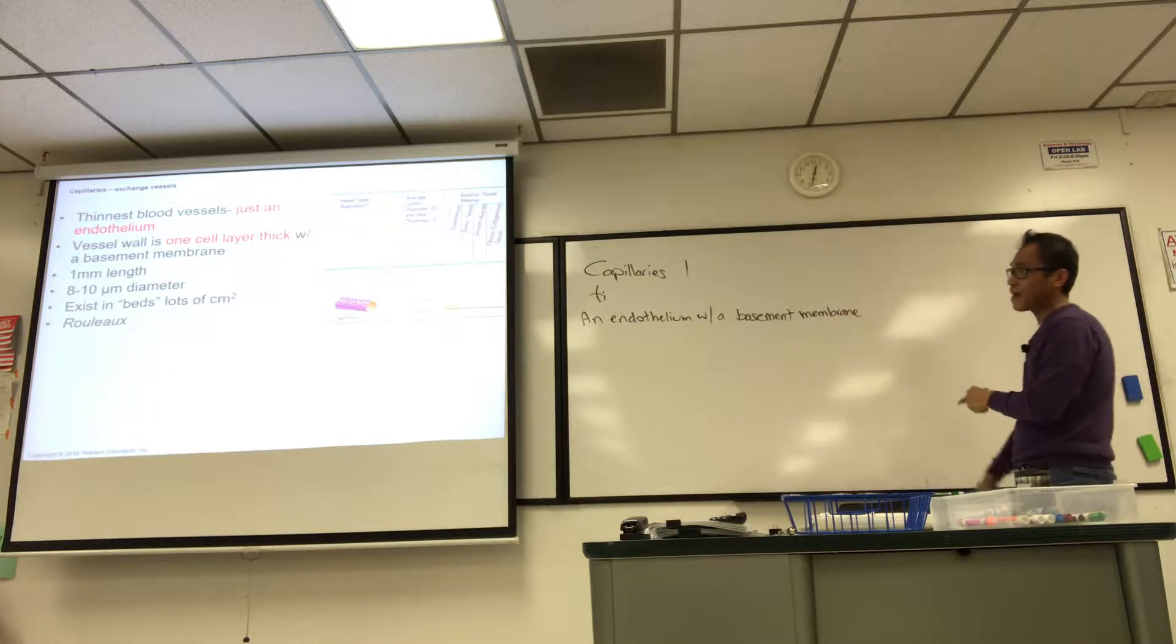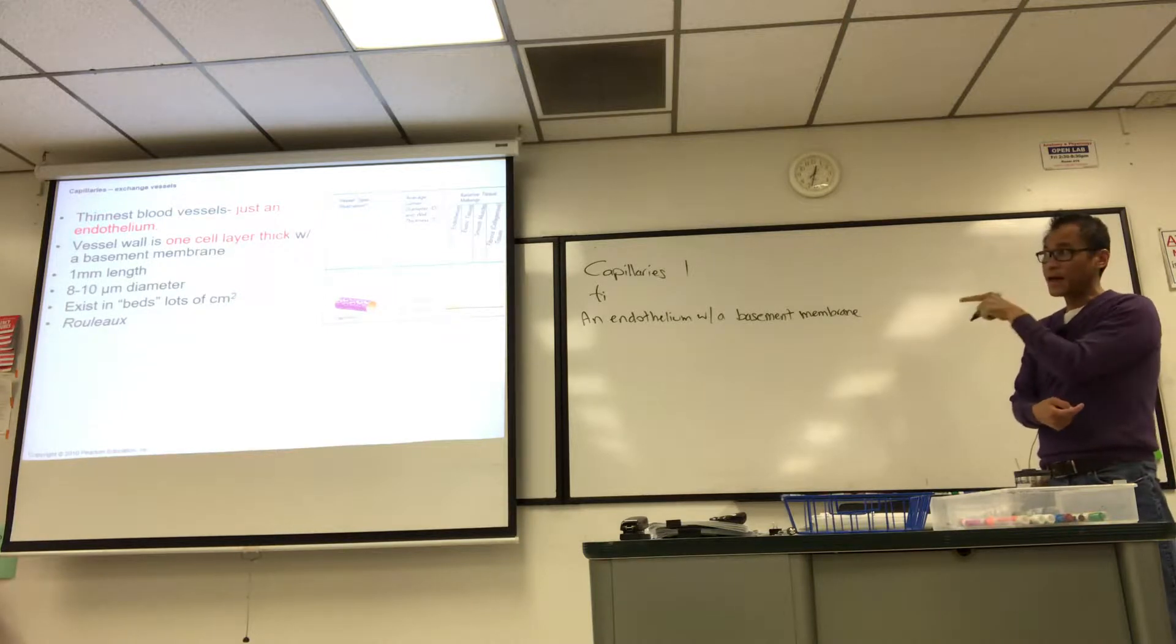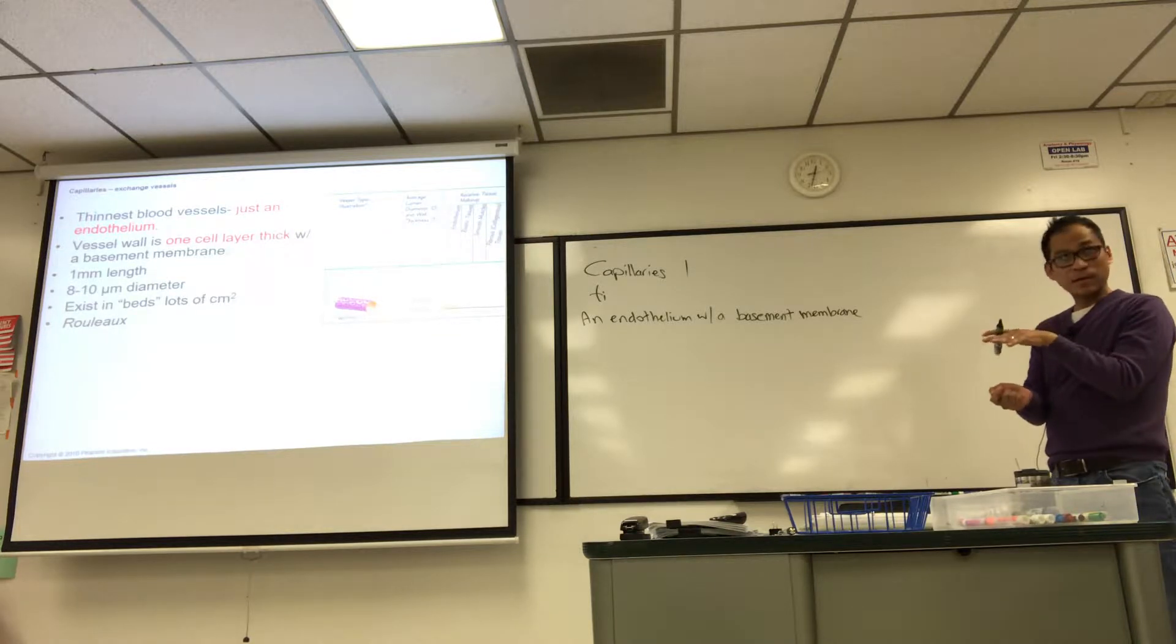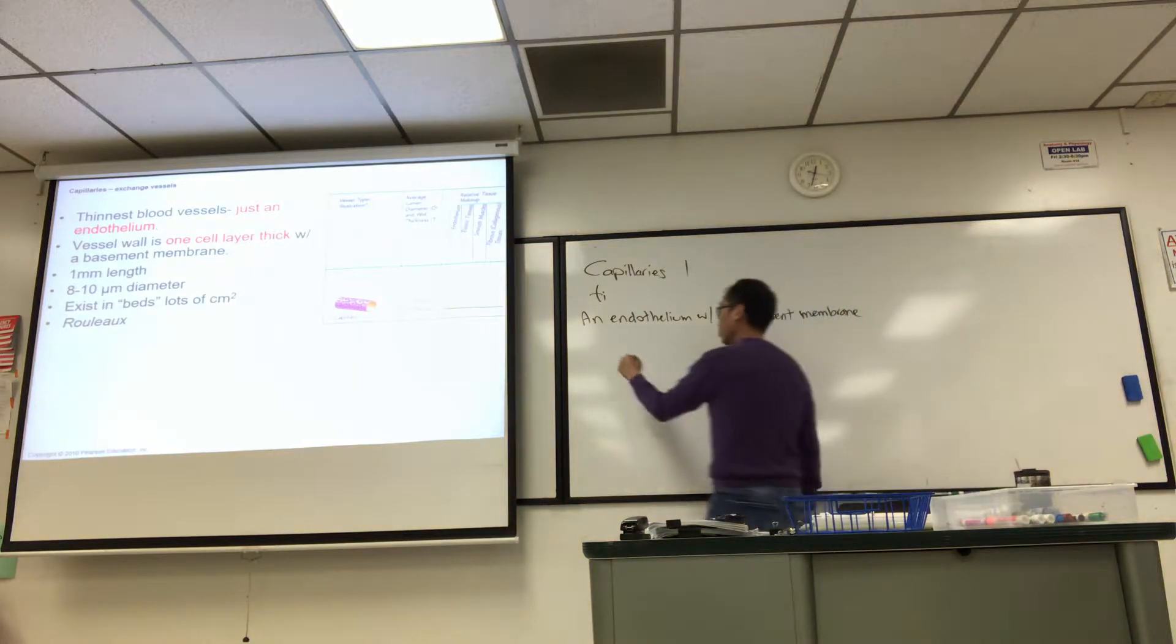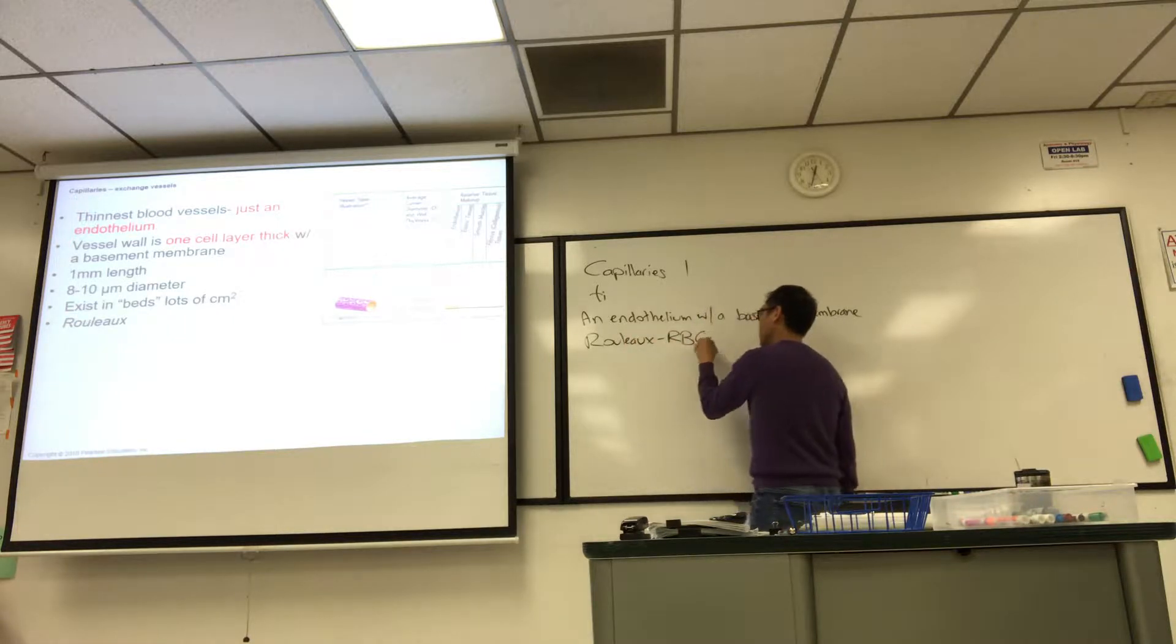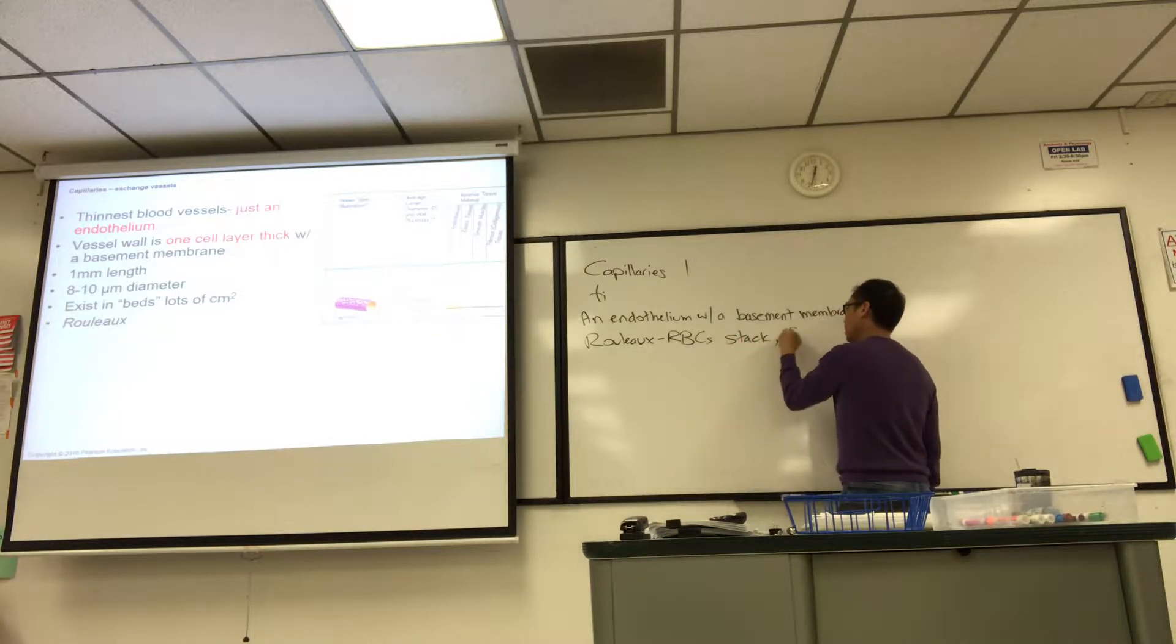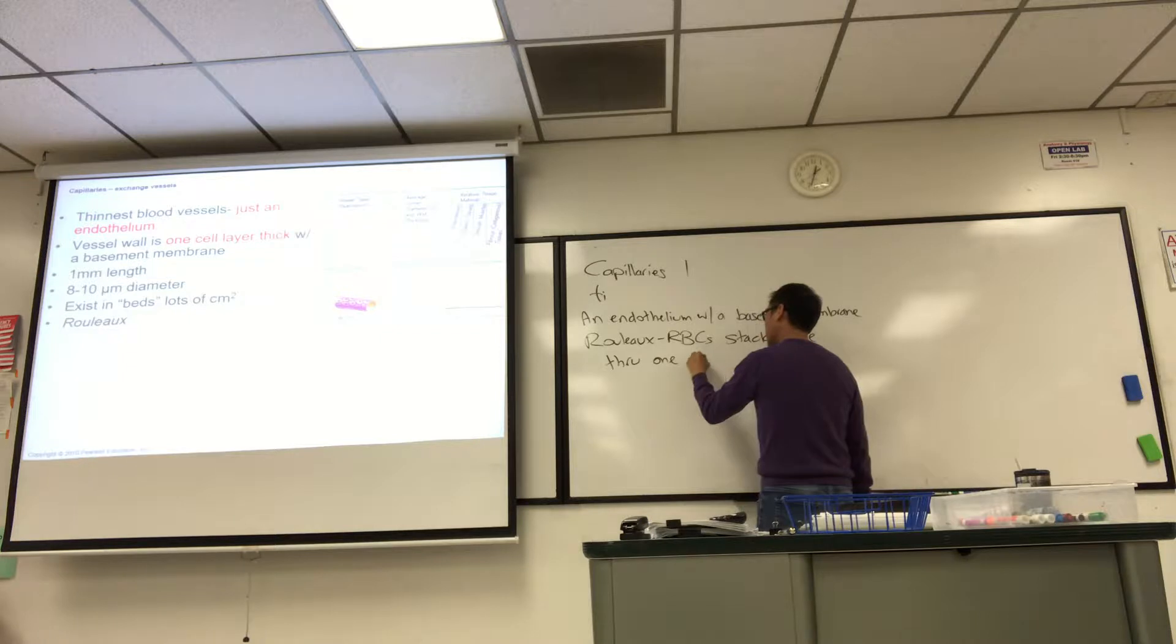The other facts I have there, they're the smallest ones, the smallest in length and the smallest in diameter. That diameter can maybe fit one red blood cell at a time. That's how wide it is, barely wide enough. So that's why that last term, rouleau, it refers to red blood cells, the RBCs. They're stacking. They have an ability to stack and then file through capillary, single file.